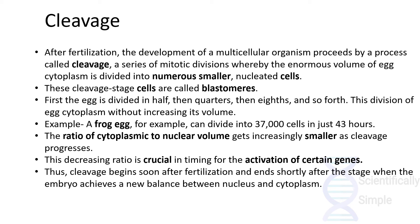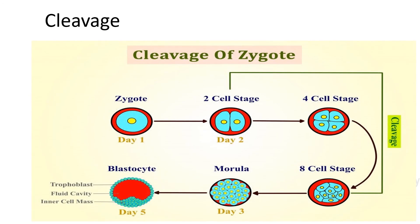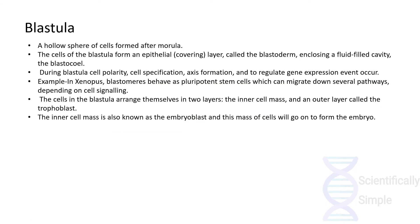As we can see, on day one there is zygote formation; on day two the first cleavage occurs to form the two-cell stage. As you can notice, the cell size remains the same but the number of nuclei increases over time — progressing to a four-cell stage, then an eight-cell stage, after which a morula and blastocyst are formed. The blastocyst consists of a trophoblast, a fluid cavity, and an inner cell mass. At day five, the blastula is a hollow sphere of cells formed after the morula.